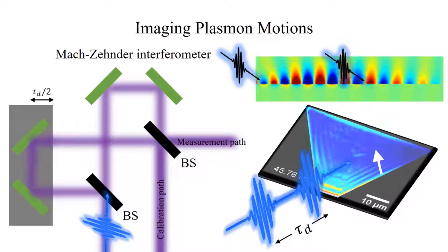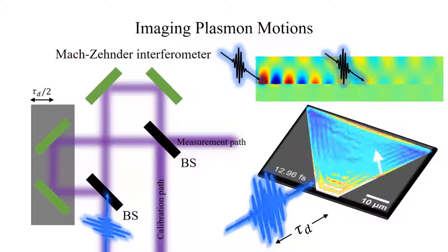By stacking of the PEEM images acquired sequentially as we advance the pump-probe delay, we generate a movie of light propagating as surface plasmon polaritons on the silver-vacuum interface.